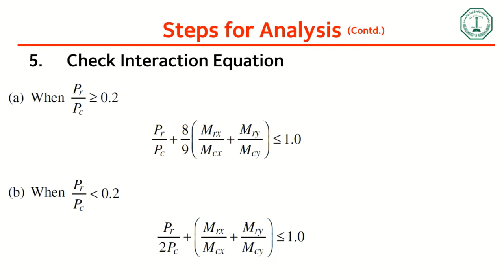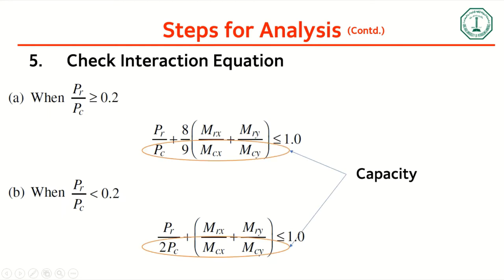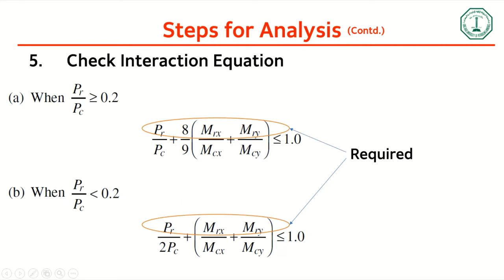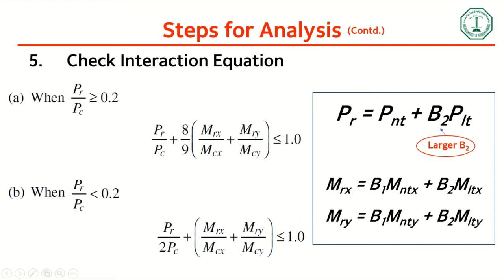The closer the interaction equation result is to 1, the more efficient the design. If it is much less than 1, the design is conservative. For analysis, the section is given and you simply substitute values into the interaction equation. In design, no section is given — you must estimate one and then perform analysis to verify it.